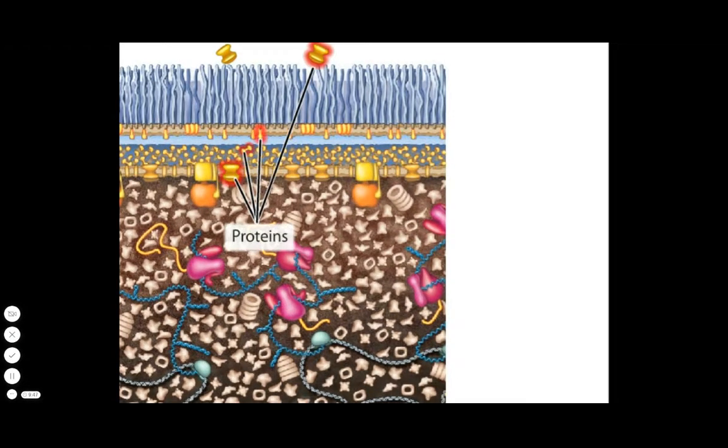Secretion systems move proteins into the inner membrane, the periplasm, the outer membrane, or outside the cell into the surrounding environment. Special export systems are required to move hydrophilic proteins through the hydrophobic membrane barriers.